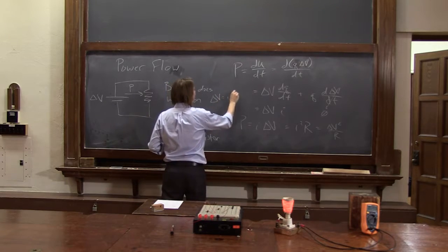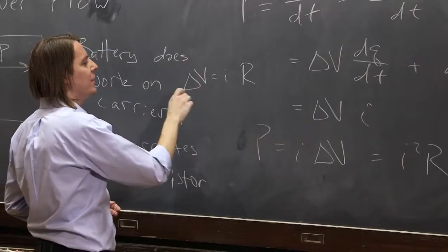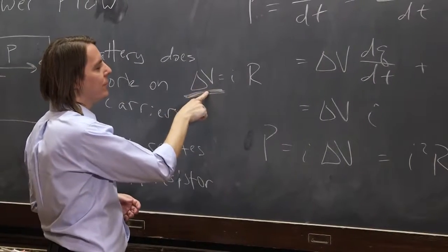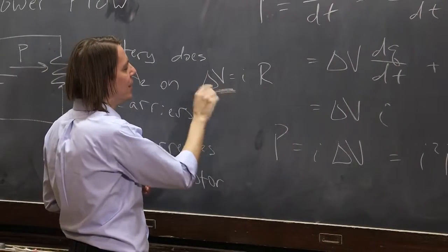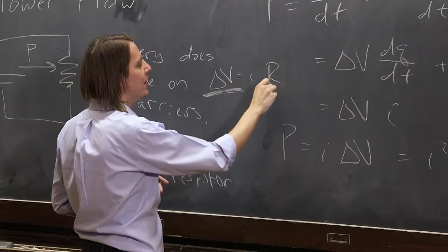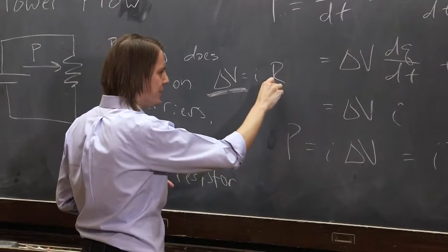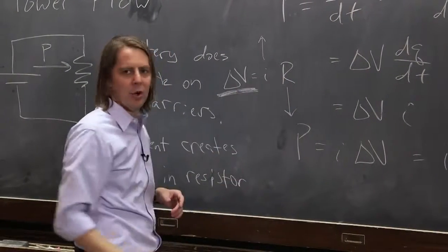Delta V equals IR. We're applying a constant delta V. The wall is giving us 115 volts. It's actually AC, but don't worry about it. 115 volts here. I blew on it, and I made the resistance go down, therefore the current had to go up.